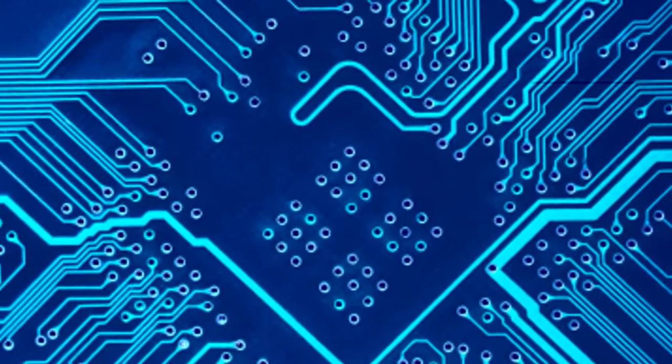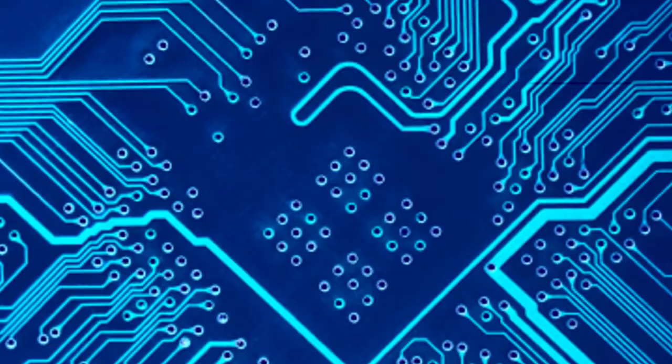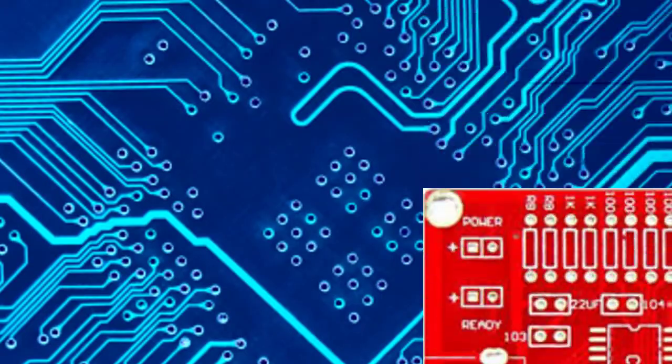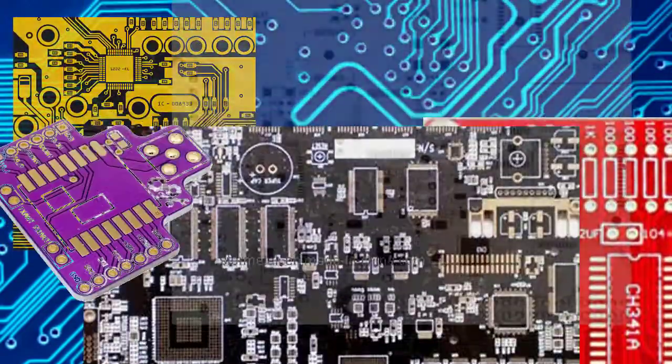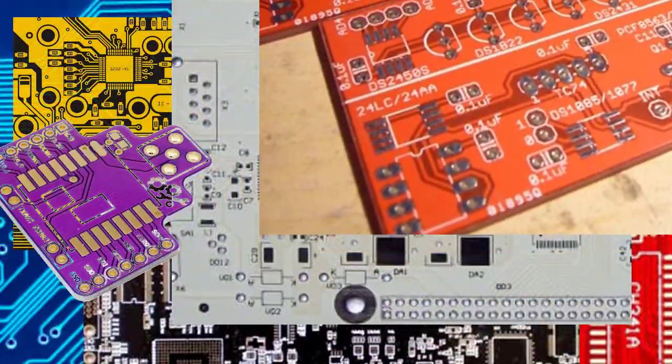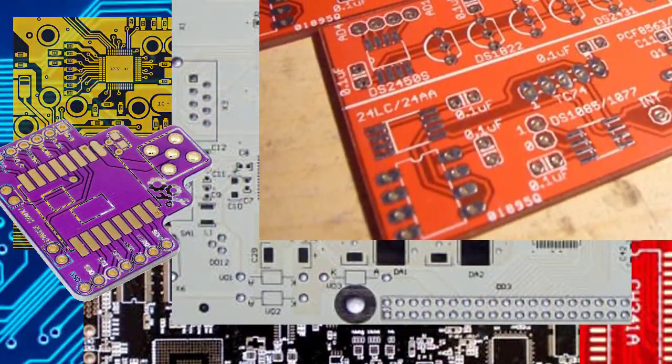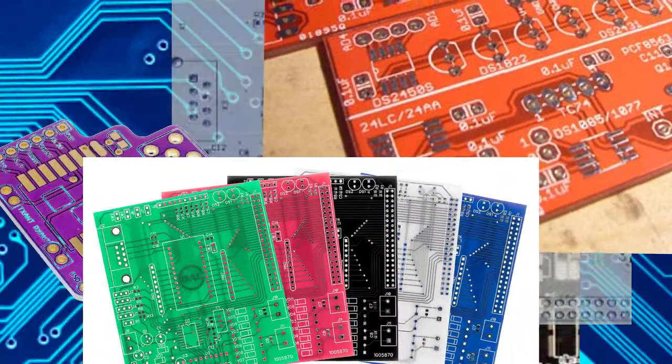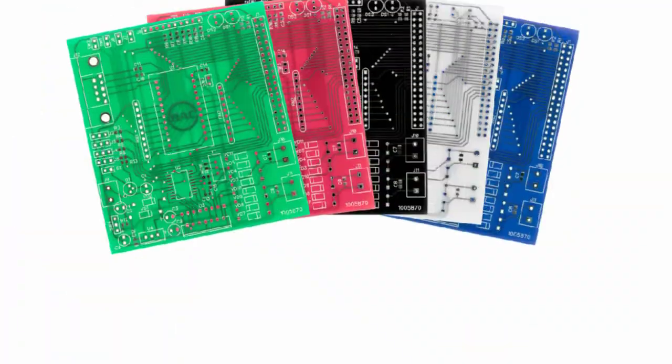Solder mask colors include blue, red, yellow, white, orange, pink, and purple — there are PCB boards available in all these colors. However, the majority of PCB boards are green.